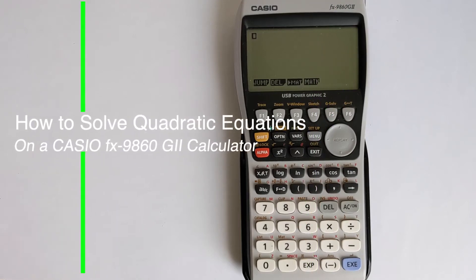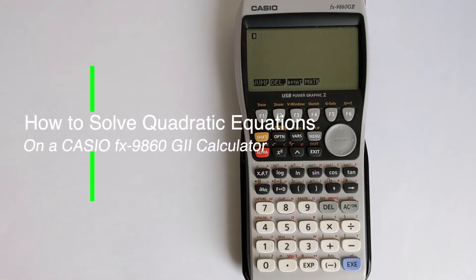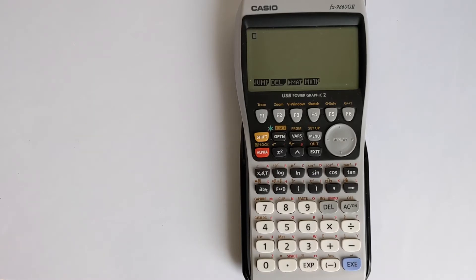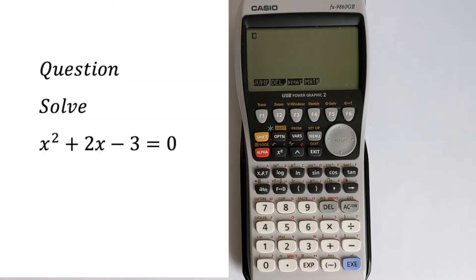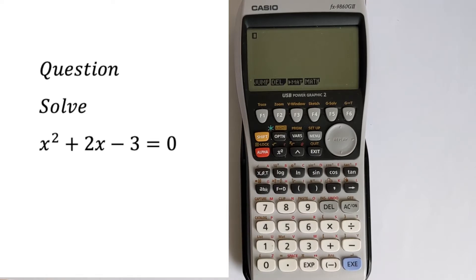In this video, we're going to show you how you can solve quadratic equations on a Casio FX9860G2 calculator. And for this video, we're going to look at a worked example. So the question we've got is to solve x² + 2x - 3 = 0.